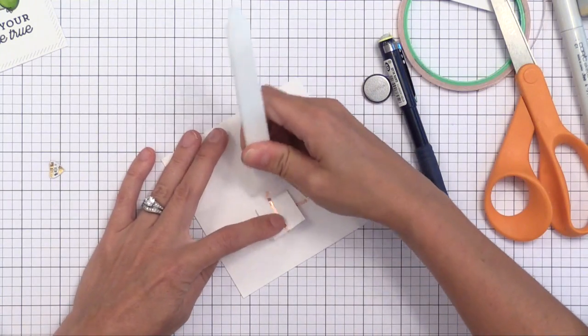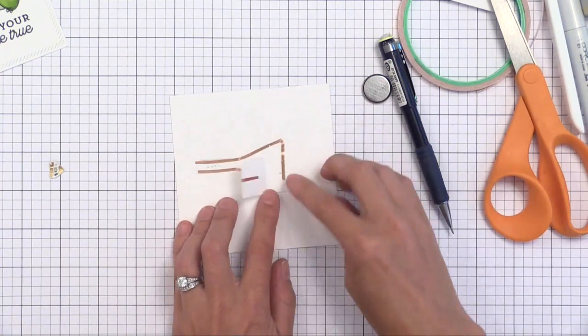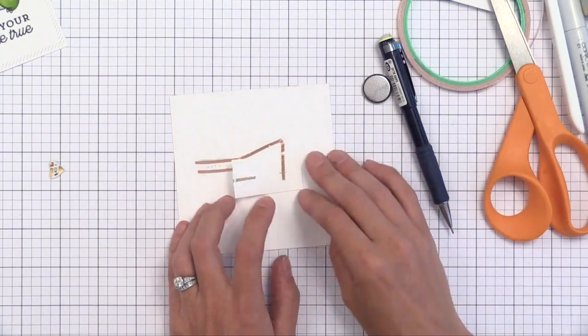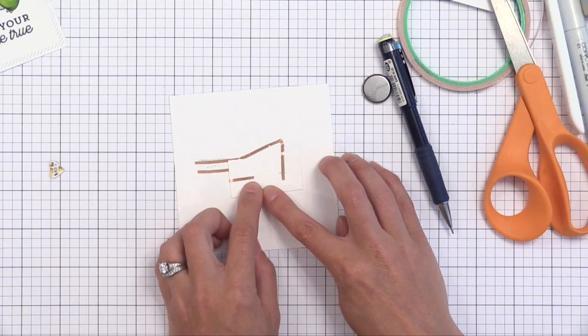So we have two copper tapes that don't cross. One starts at the top of where our light will be and ends at the plus. The other starts at the bottom of where our light will be and ends on the minus. This tape goes down very easily, especially if you rub it down with a bone folder or your thumbnail.